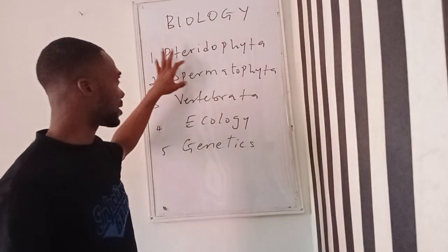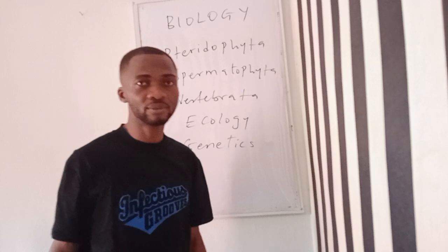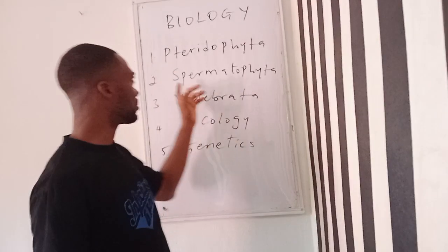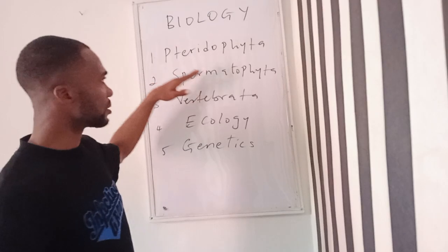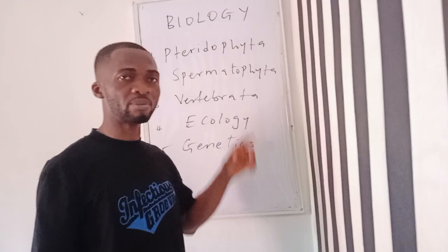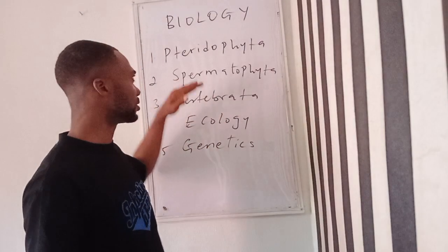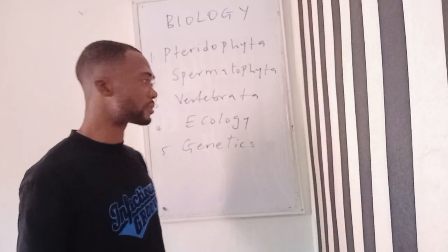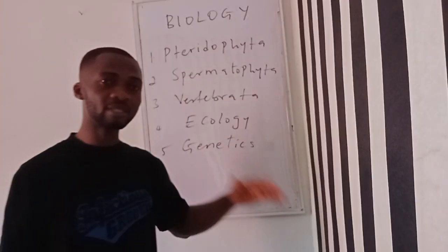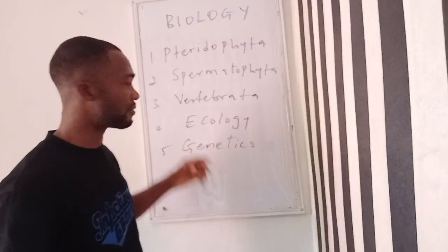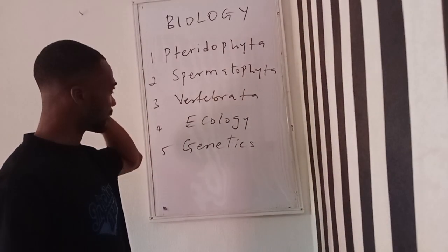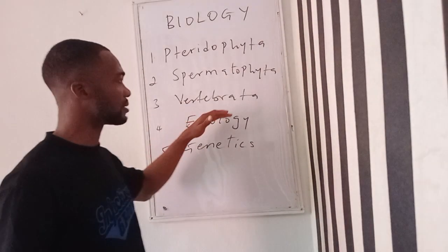After Pteridophyta, we look at Spermatophyta. The word 'sperm' means seeds, so Spermatophyta are plants that have seeds. We're going to look at the two different categories: the gymnosperms — the naked-seeded plants — and the angiosperms, those whose seeds are covered.